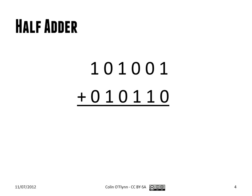A half adder is basically responsible for adding a single binary bit together and it creates a carry and a sum. You can think of it as the first part of the addition where you only have two bits in and you generate a single sum bit and a single carry bit.